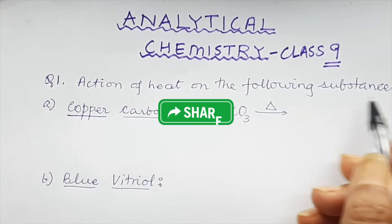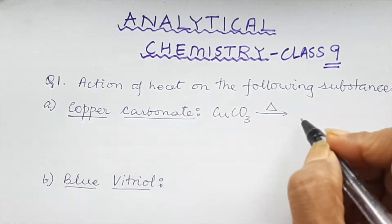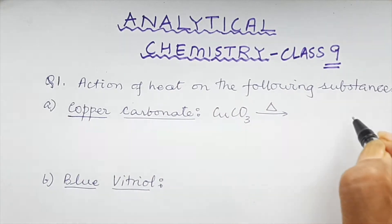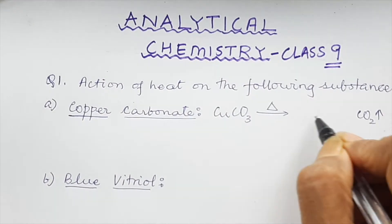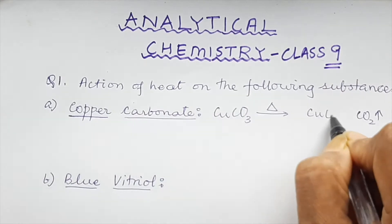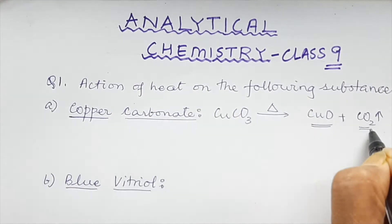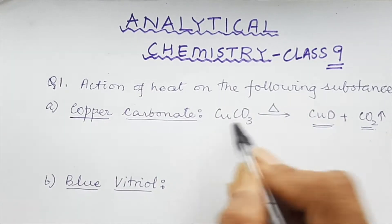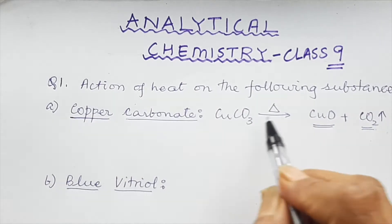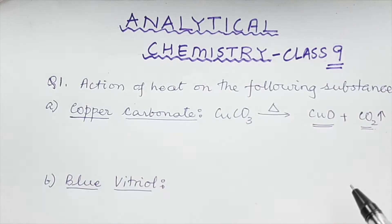The first type of question is when they ask you to find the action of heat on the following substances. The first one is copper carbonate, which is CuCO₃. On heating, because there is a carbonate, it will liberate CO₂ — shown with an upward arrow. From CO₃, CO₂ is gone, so we will have CuO remaining. Now let us check the balanced reaction: copper — one atom each side, carbon — one atom each side, and oxygen — three atoms on each side. So our reaction is balanced.